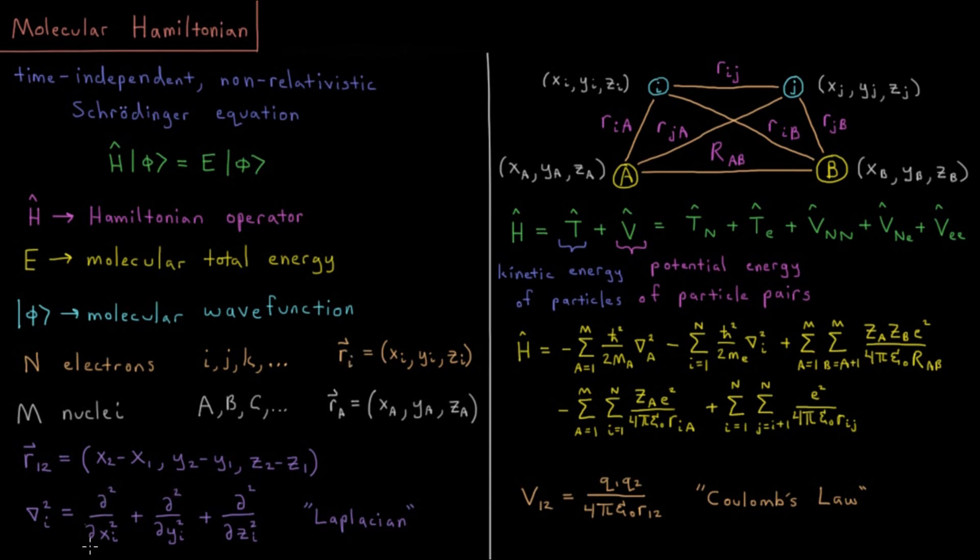That is the second partial derivative with respect to its x component plus second partial derivative with respect to y plus second partial derivative with respect to z. The Laplacian for a given particle is the sum of second partial derivatives with respect to all its Cartesian components.